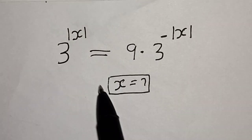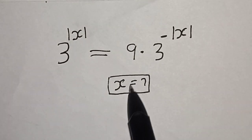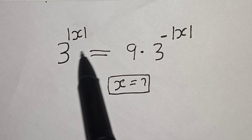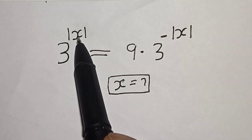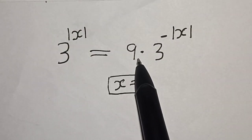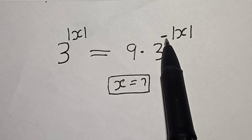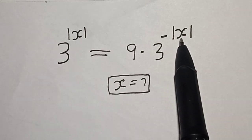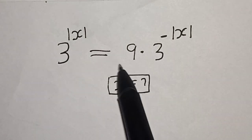Hi everyone, welcome to my class. In this class we want to find the value of s from this equation: 3 raised to the power of absolute value of s is equal to 9 multiplied by 3 raised to the power of minus absolute value of s.